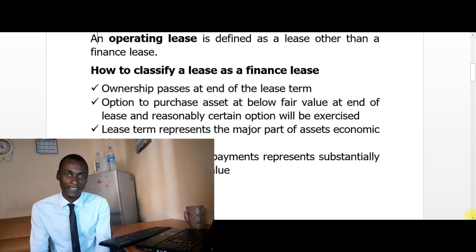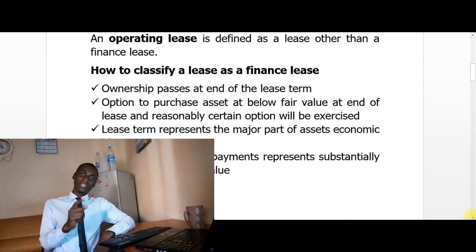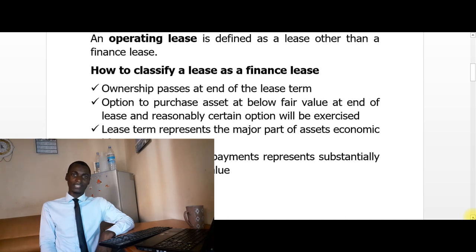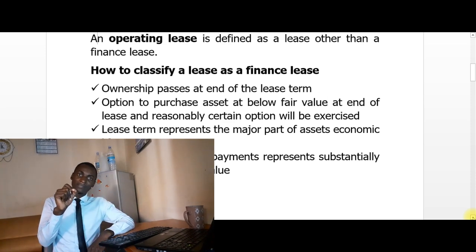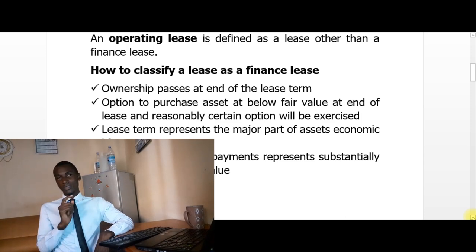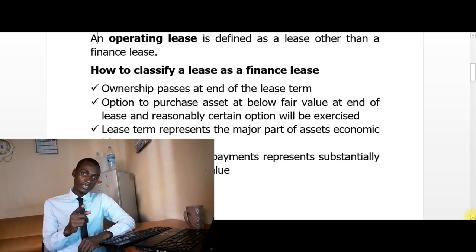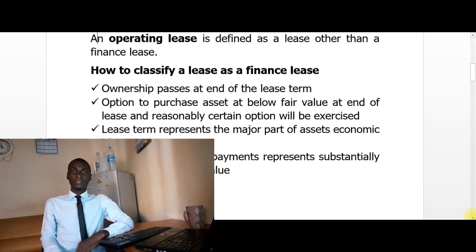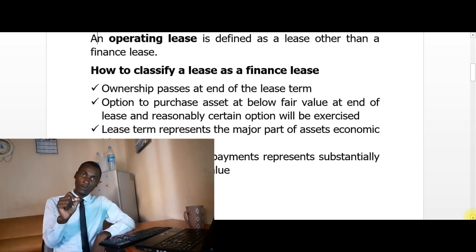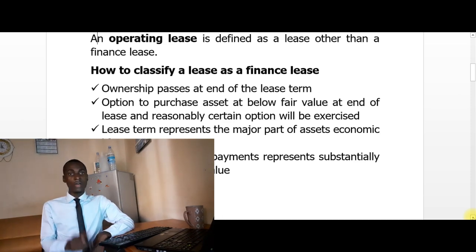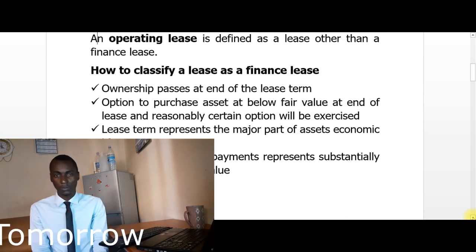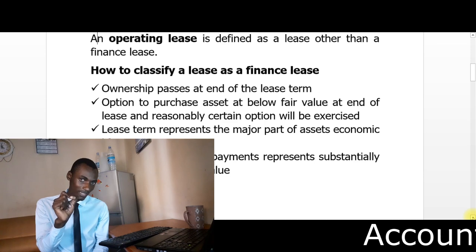How do we classify a lease as a finance lease? The starting point is to classify the lease as either operating or finance. A finance lease substantially transfers all the risks and rewards of ownership to the lessee. One indicator is that ownership passes at the end of the lease term — ownership of the asset can be transferred to the lessee at the end of the lease.